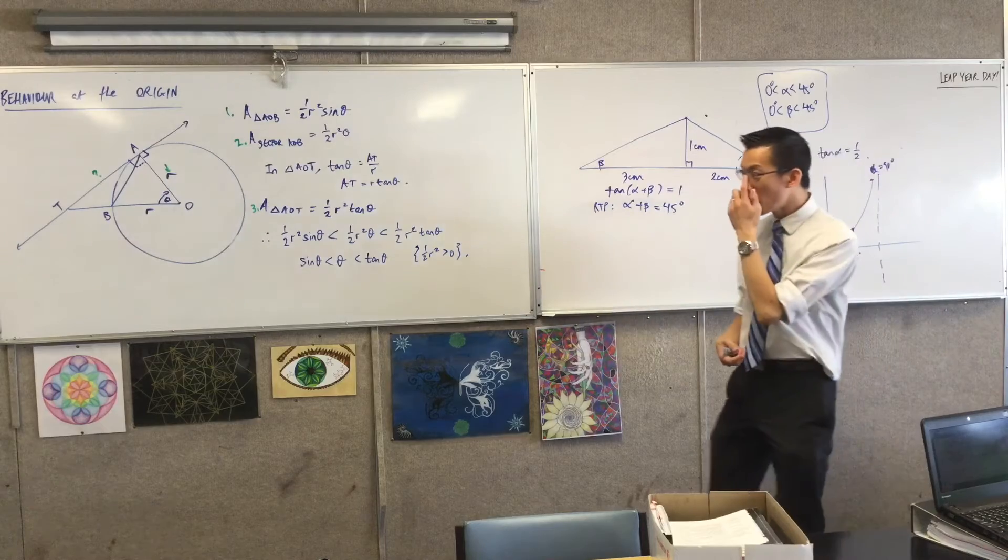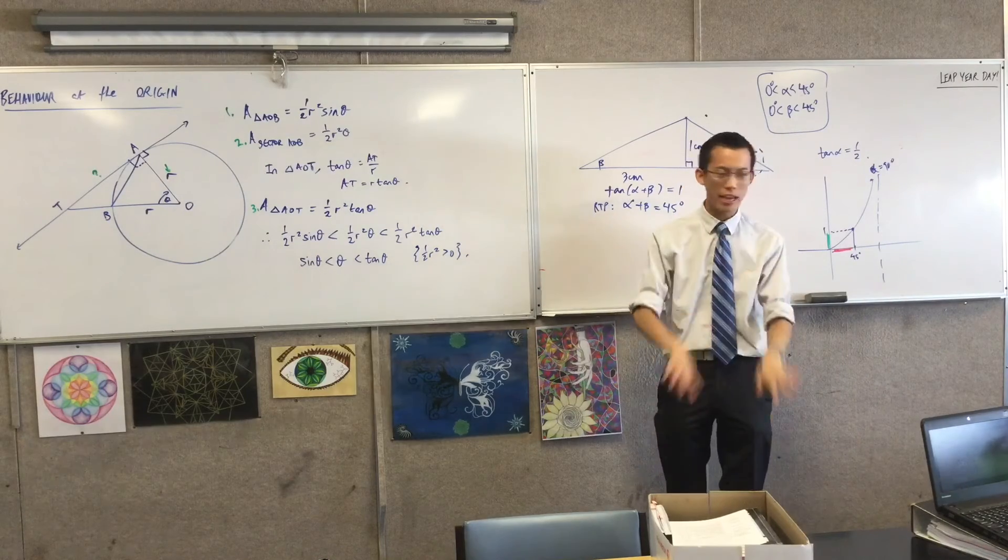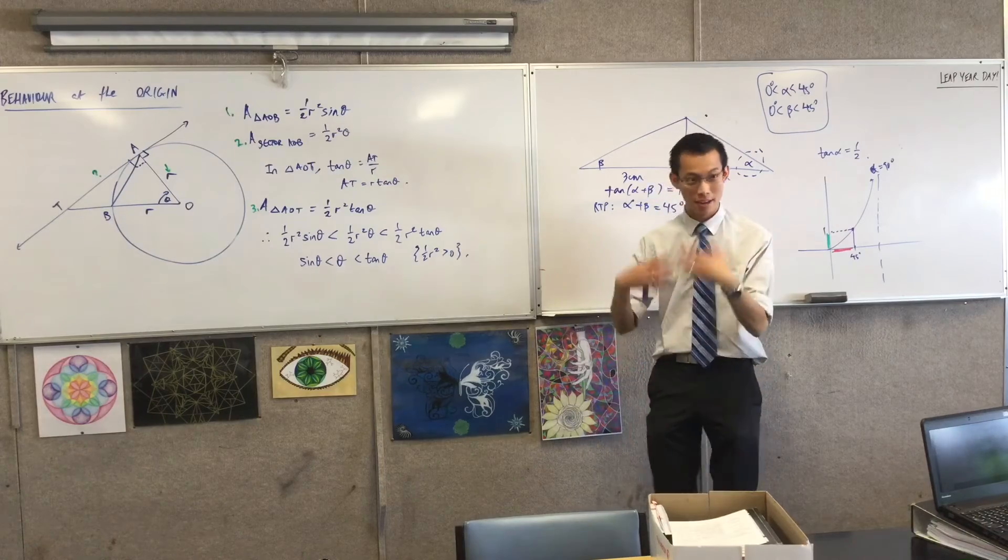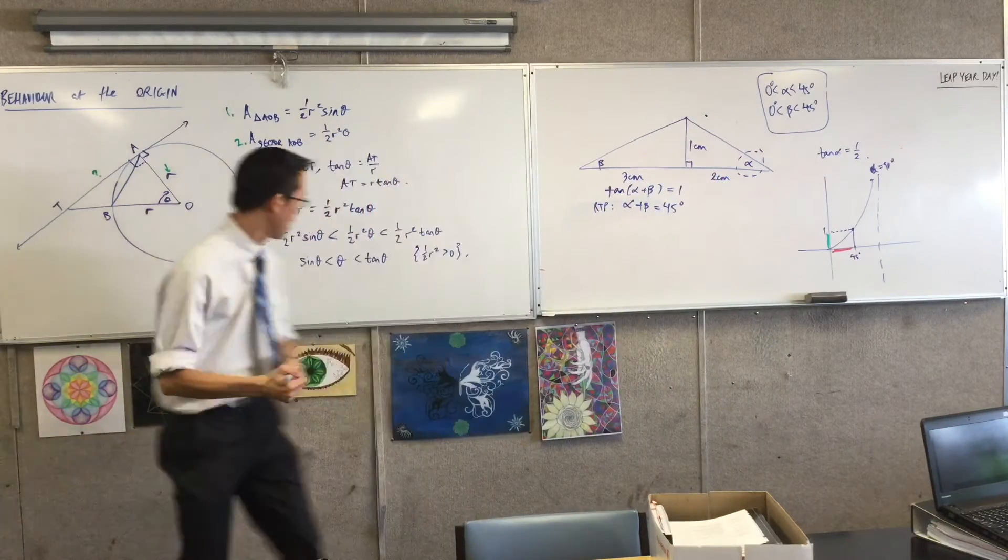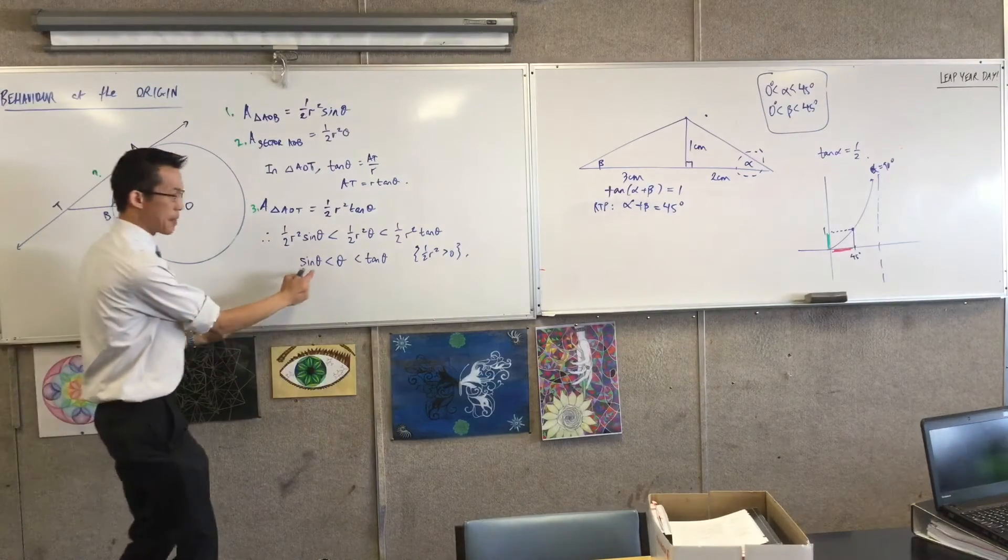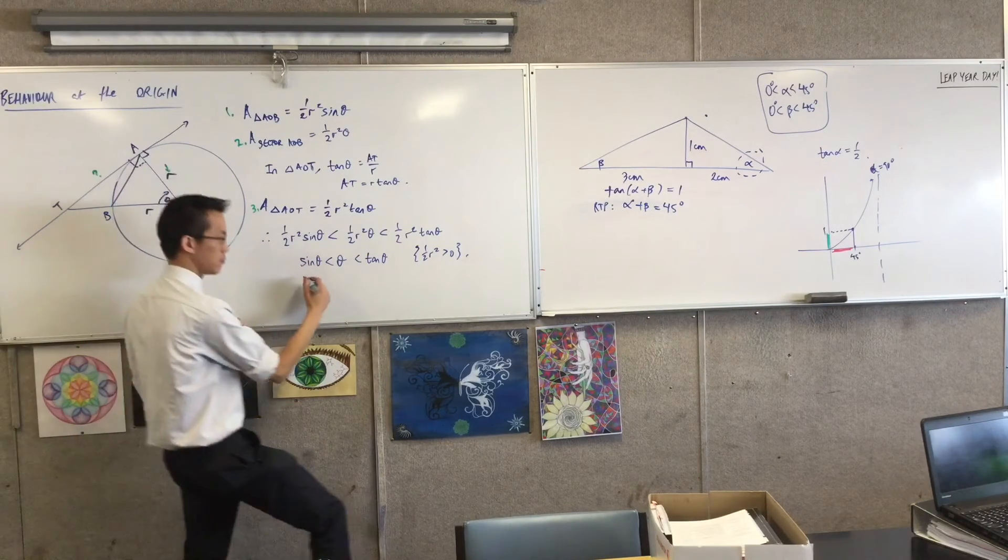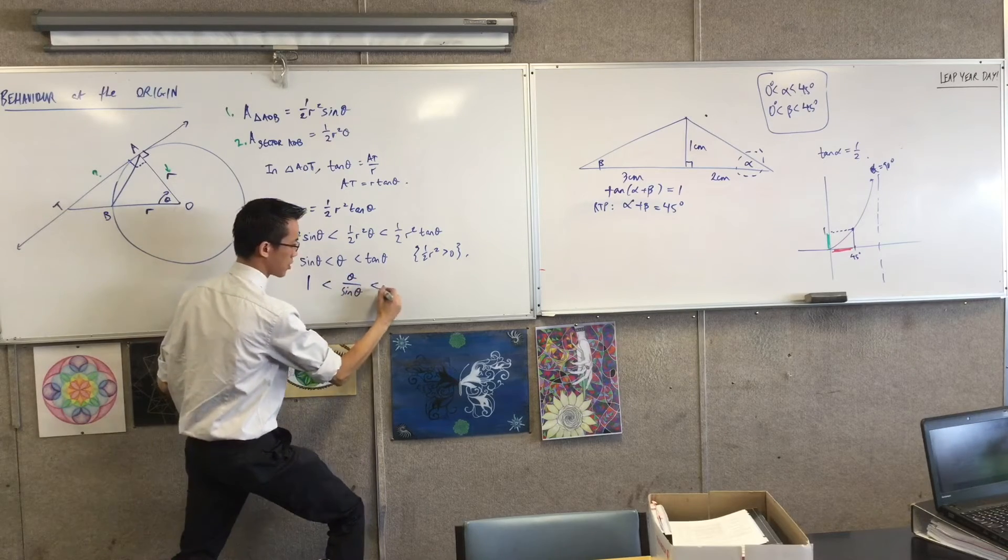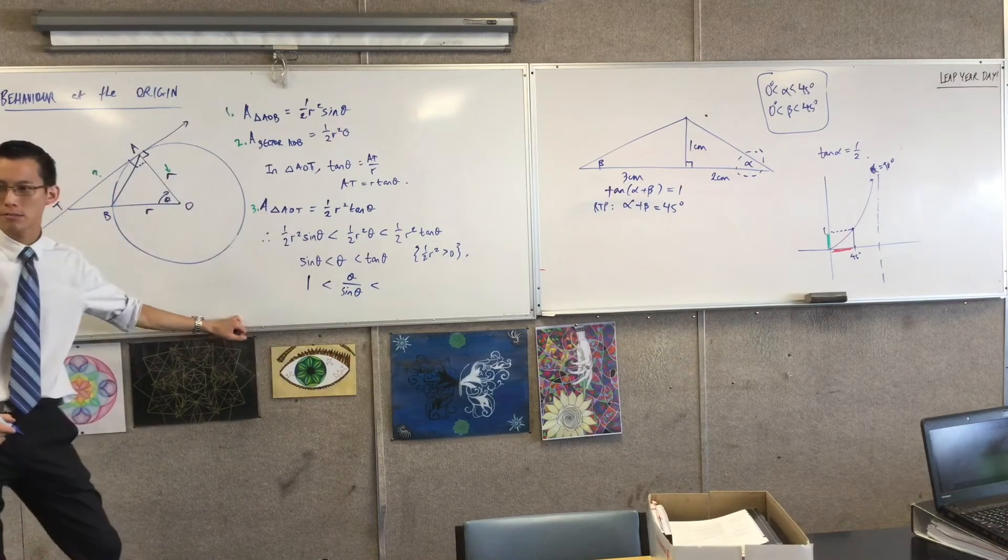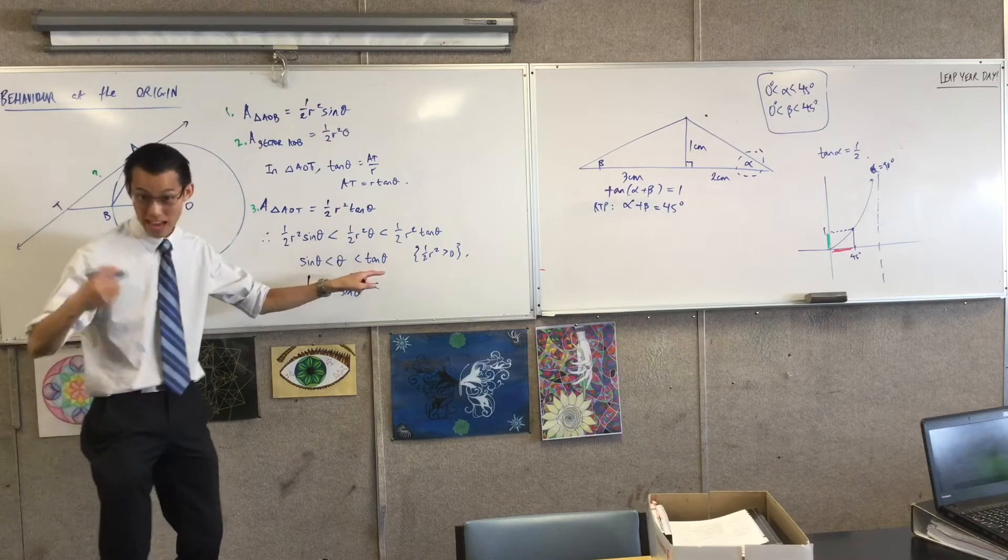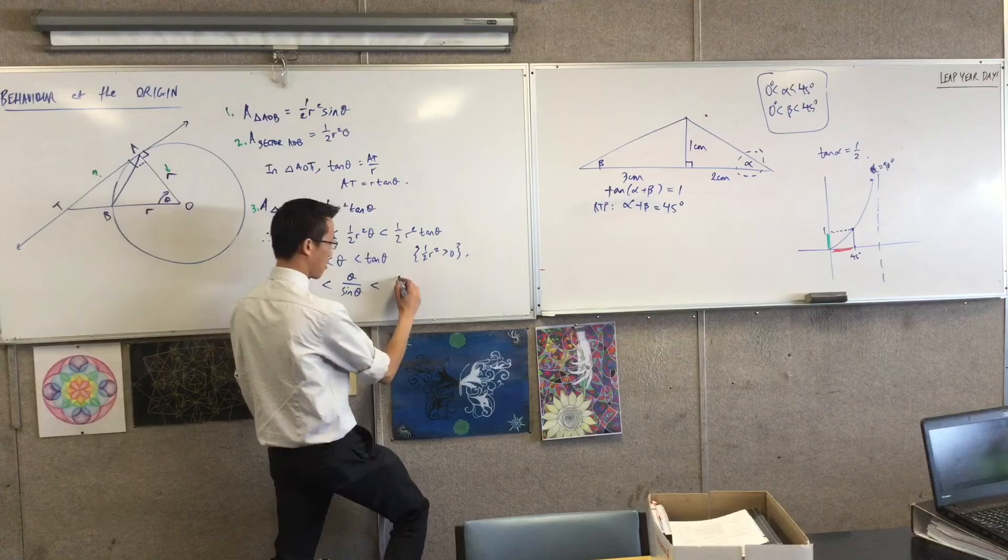Now I'm going to do one more thing which is a little counterintuitive, but you will see why in a second it produces a very simple result. I'm going to divide everything through by sine theta. That will give me here 1. That will give me here theta over sine theta. And on the right-hand side, this is sine over cos, isn't it? I've just divided by sine, so this is 1 over cos now.